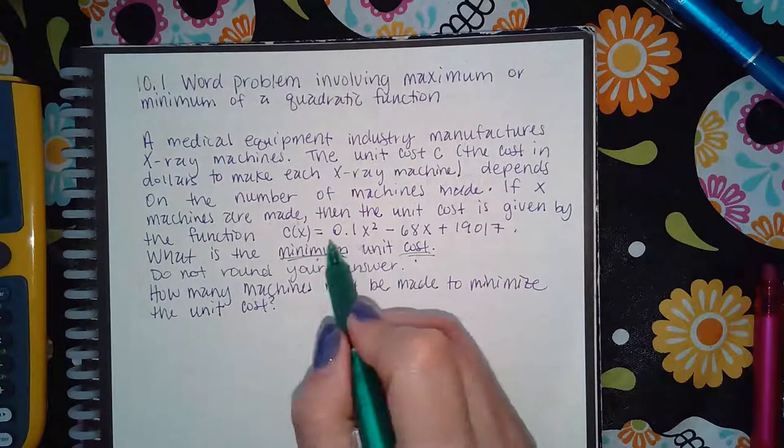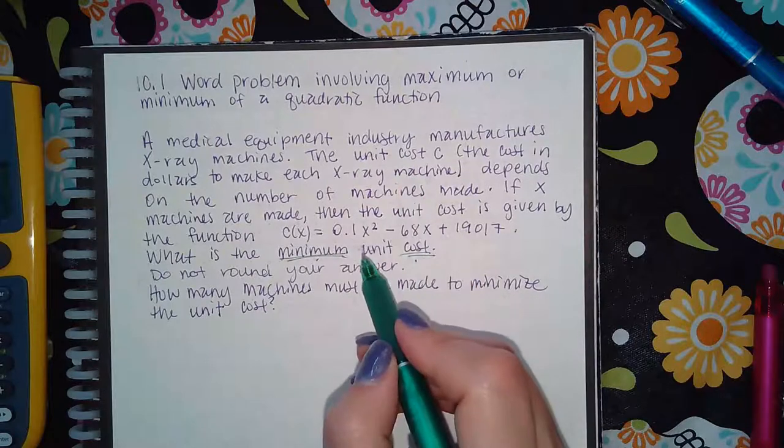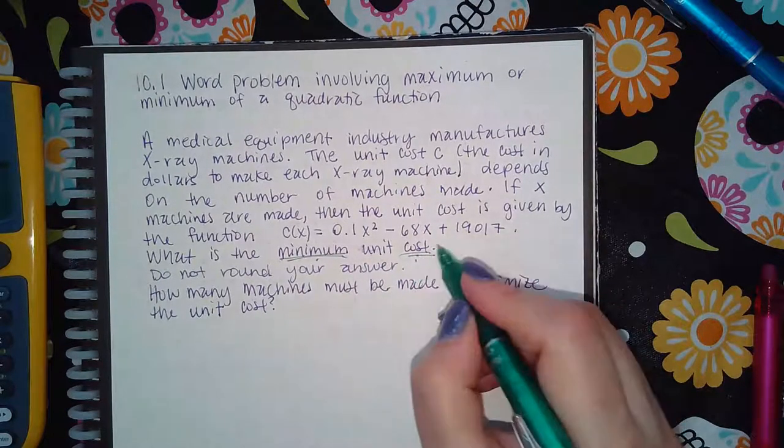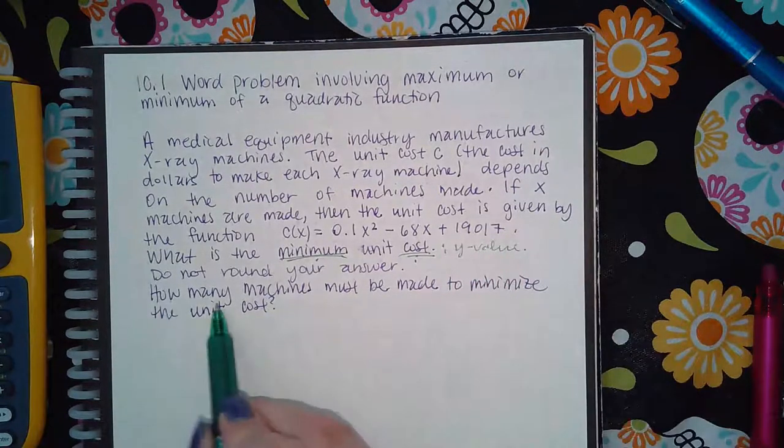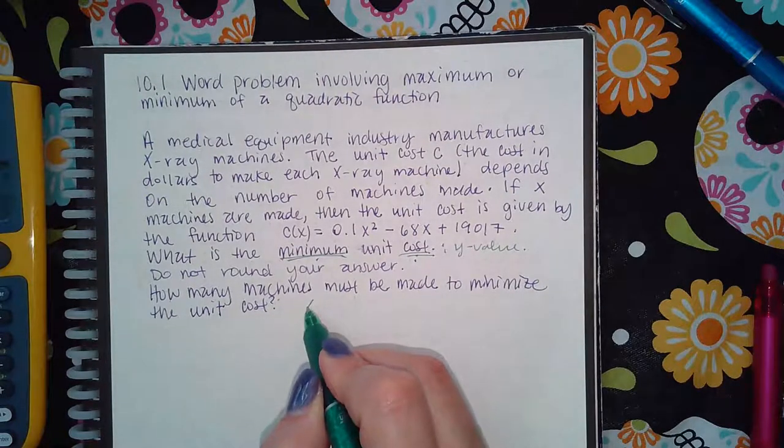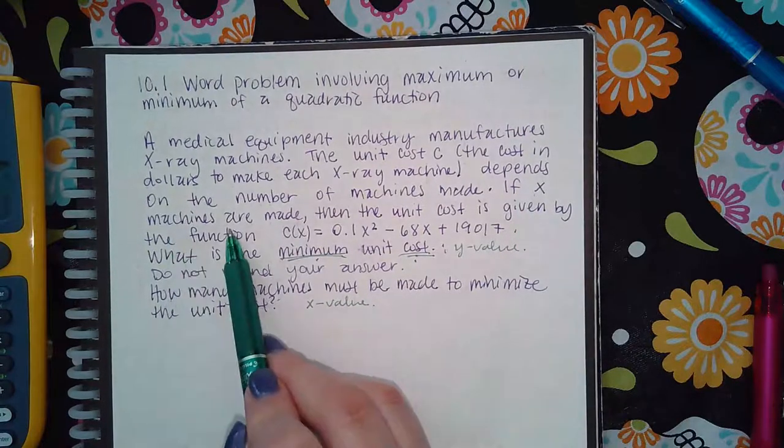Why minimum? This is a positive a value, which means it will open up, so it's a min. The minimum cost is asking for the y value. And how many machines must be made to get this minimum cost is asking for the x value, since x is the number of machines that are made.